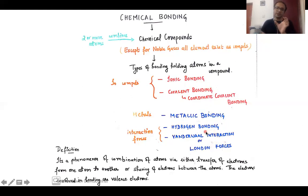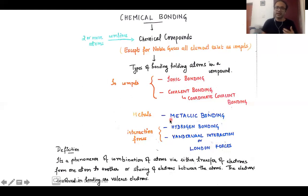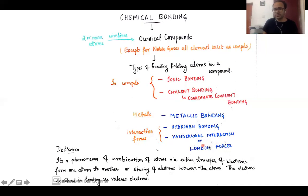When we talk about a compound — a combination of two or more atoms forming a new compound — we mainly consider two types of bonding: ionic bonding and covalent bonding. When it comes to metals, there is a different type called metallic bonding, which we are not going to study in this particular course.